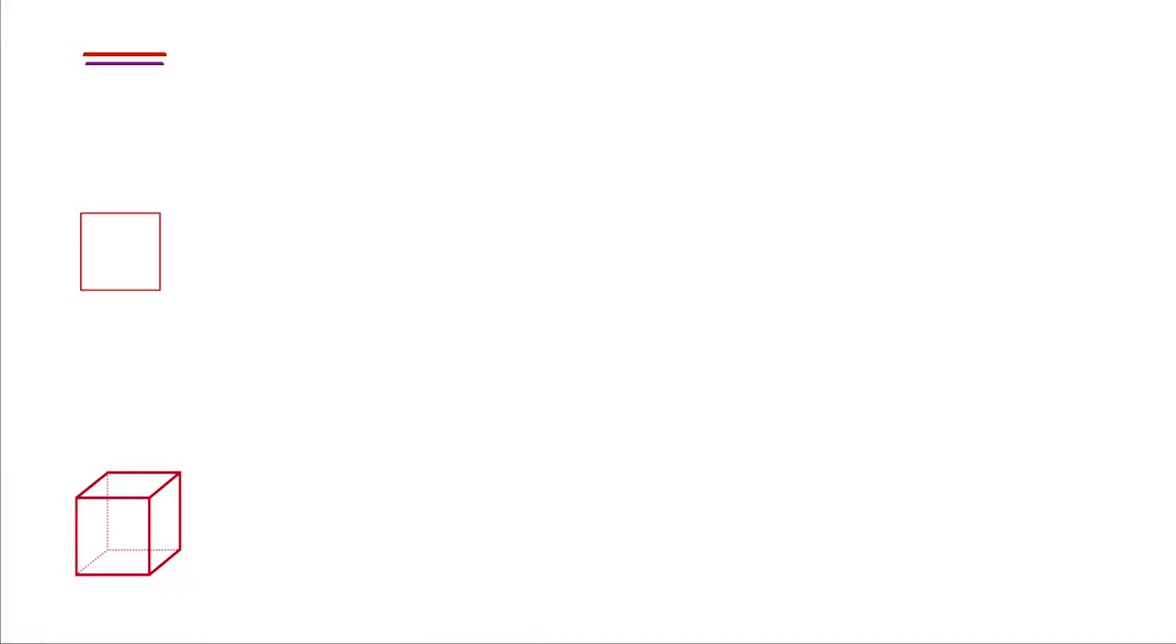Let me write this down. A line is one-dimensional, so when scaling it by a factor of two, its length increases to two. Mathematically, two to the first power, or its dimension of one, is two.